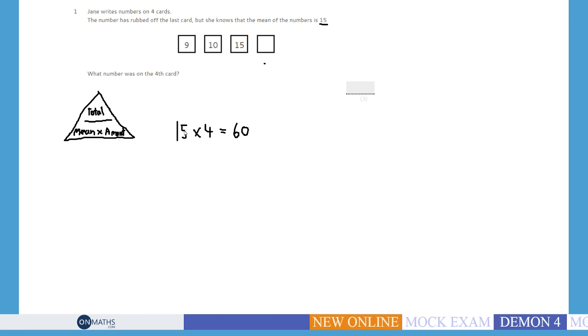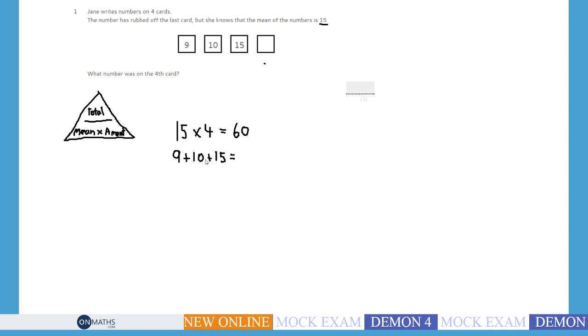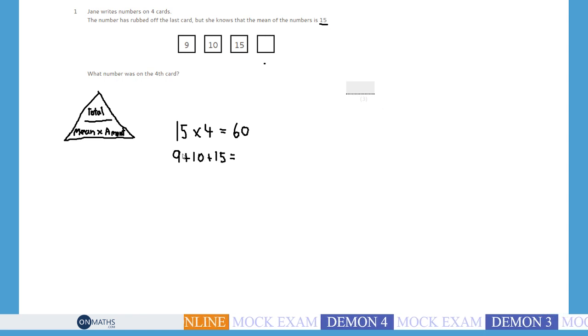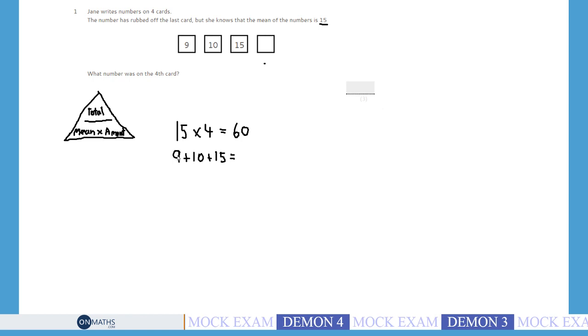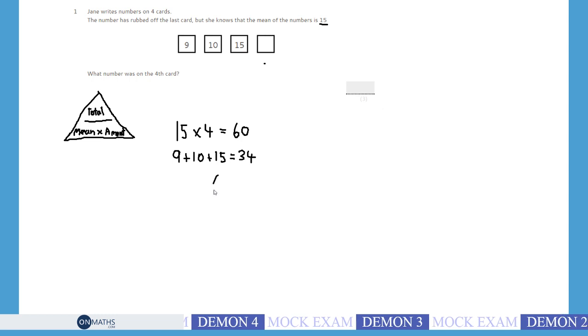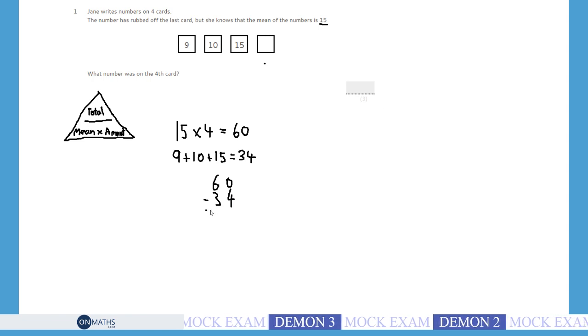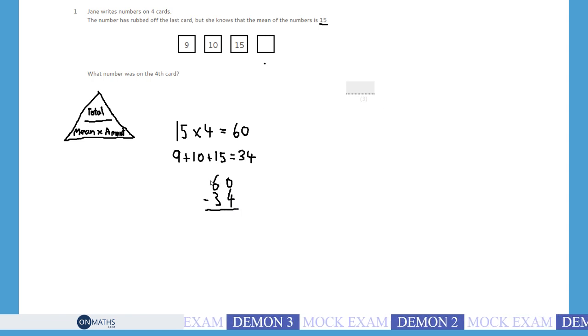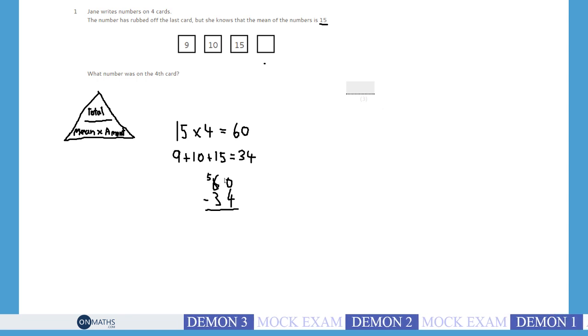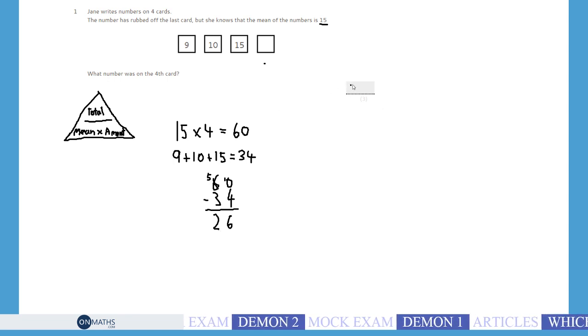Well what do they add up to so far? We have 9 plus 10 plus 15. So 10 plus 15 is 25, plus 10 would be 35 and then take away 1 because it's not quite 10. So 34. And then we can show the examiner exactly what we're doing. 60 take away 34 to see what number remains. You can't do 0 take away 4 so I carry 1 over. So 10 take away 4 is 6. 5 take away 3 is 2. So our missing number is 26.